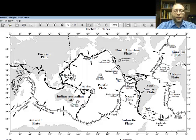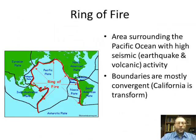So the earthquakes and volcanoes are concentrated where the plates meet. You'll also need to know about the Ring of Fire — an area that surrounds the Pacific Ocean, and it's mostly convergent plate boundaries. The exception is California, where we have the San Andreas Fault, which is a transform boundary.